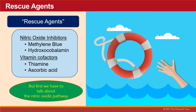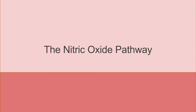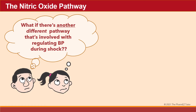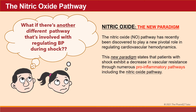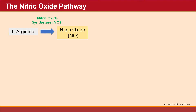But first we have to talk about the nitric oxide pathway. What if there's another different pathway involved with regulating blood pressure during shock? Well, nitric oxide may very well be the new paradigm. The nitric oxide pathway has recently been discovered to play a pivotal role in regulating cardiovascular hemodynamics. Patients with shock exhibit a decrease in vascular resistance through numerous pro-inflammatory pathways, including the nitric oxide pathway. The nitric oxide pathway begins with L-arginine being converted to nitric oxide via the nitric oxide synthetase enzyme.